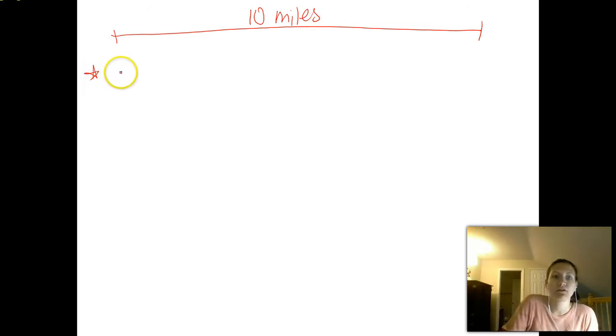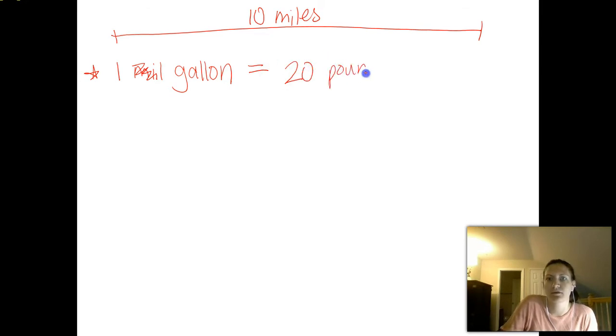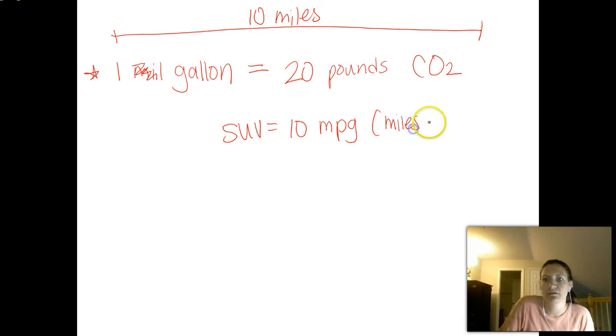So from point A to point B, let's say this is 10 miles. And as a reminder, for every one gallon, that's going to equal 20 pounds of CO2. So they're driving a car. Now, depending on the car you have is going to matter as to how good of a gas mileage you get and how much carbon dioxide you end up releasing. So let's start with an easy one. Let's say they're driving an SUV, an old SUV. And so that SUV gets, so an SUV gets 10 MPG. MPG stands for miles per gallon. So this is saying for every gallon that's used, that gallon is going to take you 10 miles.